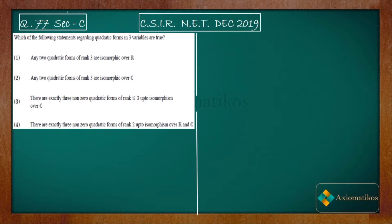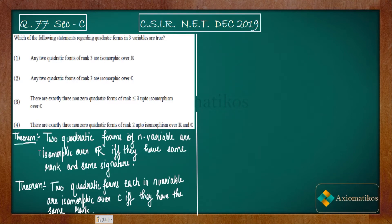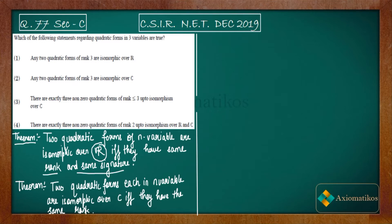Consider these two theorems. Theorem one: two quadratic forms in n variables are isomorphic over ℝ if and only if they have the same rank and the same signature. So the question is: two quadratic forms over ℝ will be isomorphic if and only if they have the same rank and same signature. Option one only states rank 3 — it does not mention the signature — so this statement is incomplete and therefore incorrect.